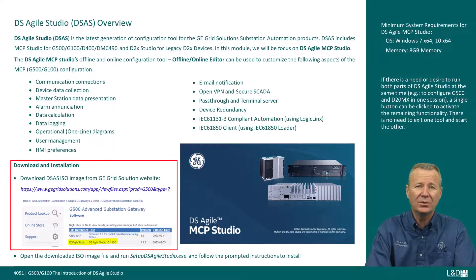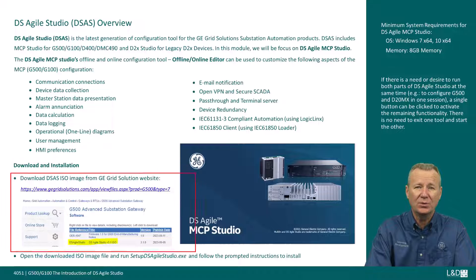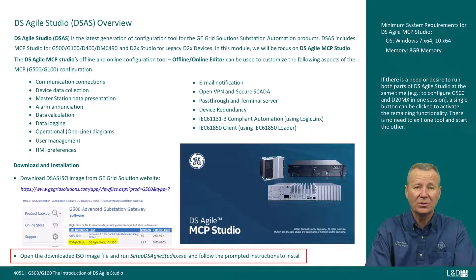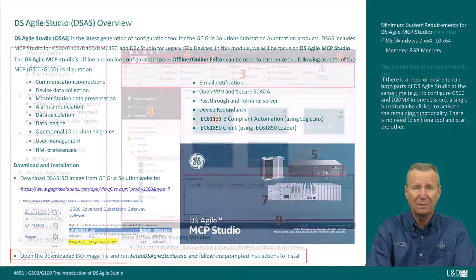The user can download the DS Agile Studio ISO image file from the GE Grid Solutions website, then open the downloaded ISO image file and run setup dsagilestudio.exe, following the prompted instructions to install.